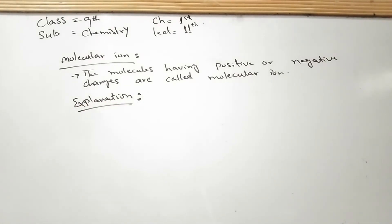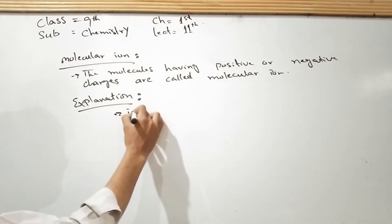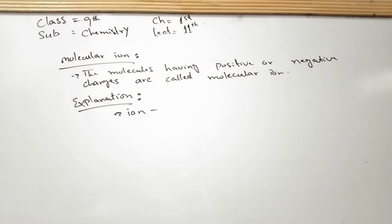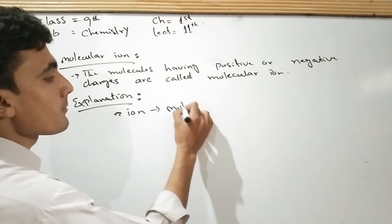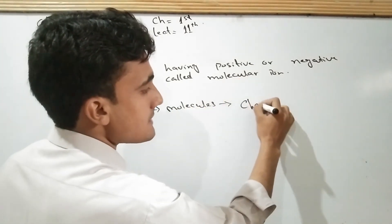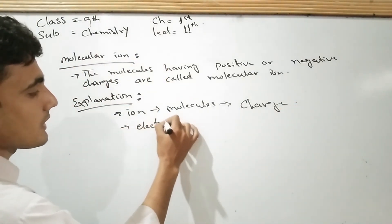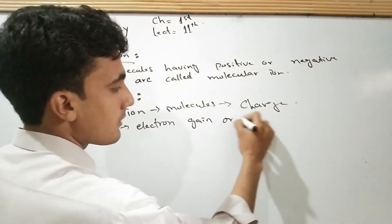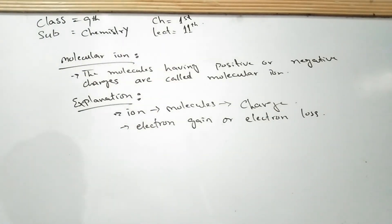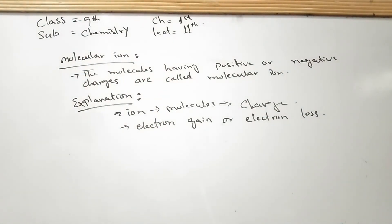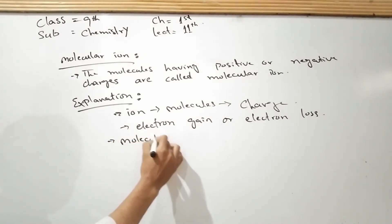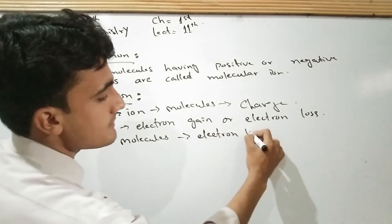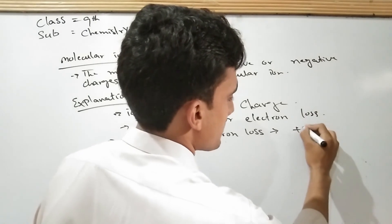Just like ions, molecular ions are also formed by loss or gain of electrons. When a molecule loses an electron, it acquires a positive charge. This is because the number of protons becomes greater compared to the number of electrons, resulting in a positive charge.